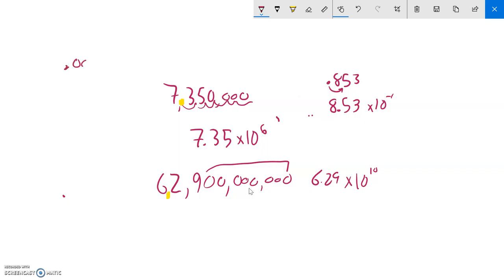Last example, .000000257. If I want to write this in scientific notation, it would be... The decimal point would be here. So it would be 2.57 times 10 to the... How many spaces? 1, 2, 3, 4, 5, 6. Negative 6. So if it's a number that's really small, it's going to have a negative exponent. If it's a number that's big, it's going to have a positive exponent.